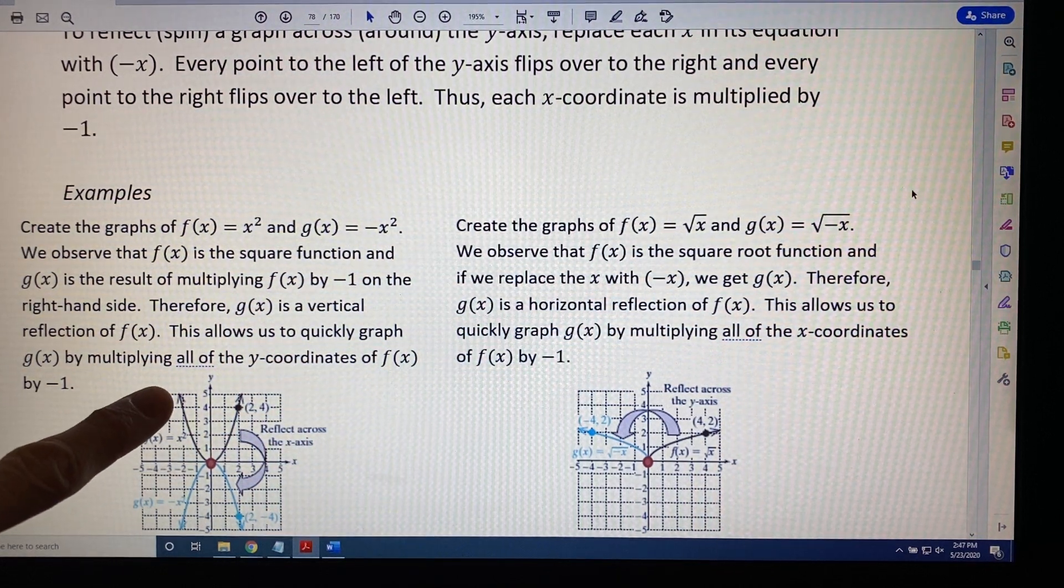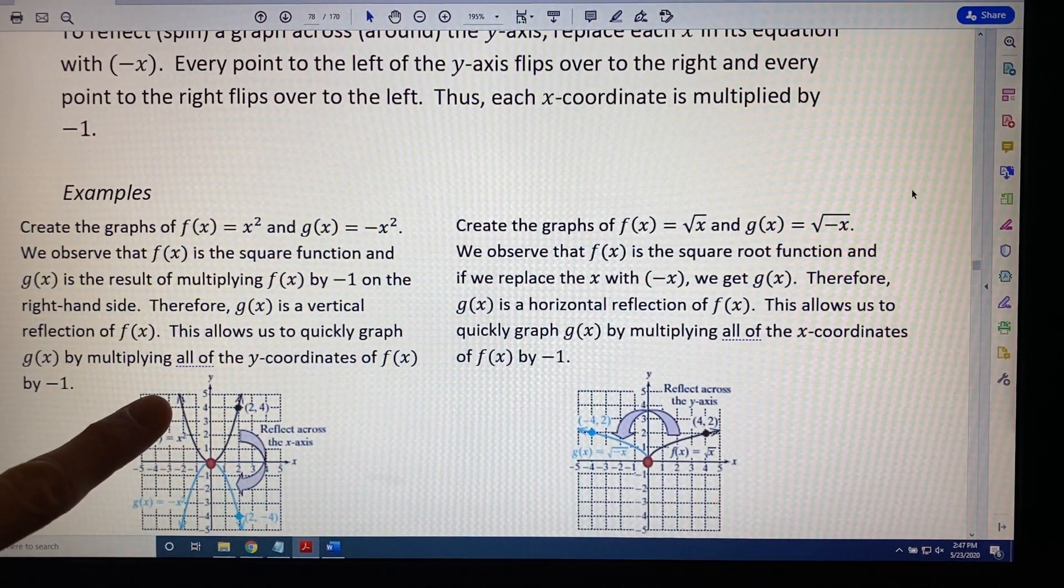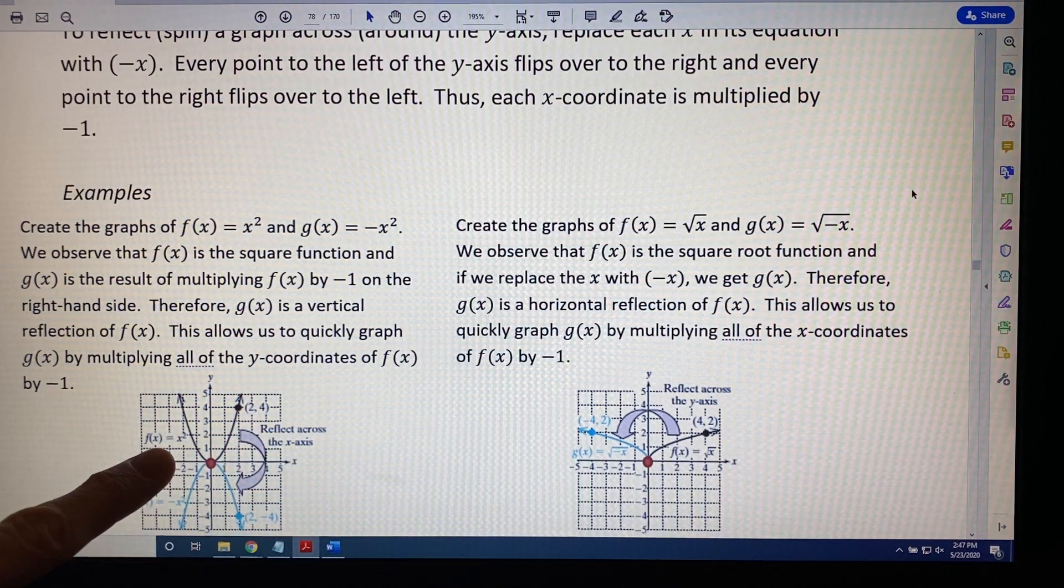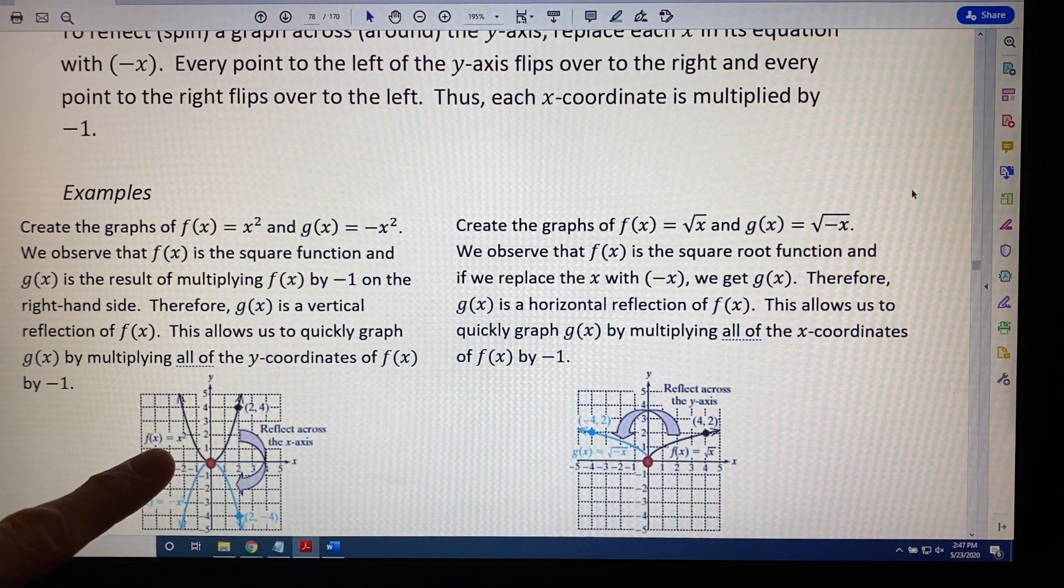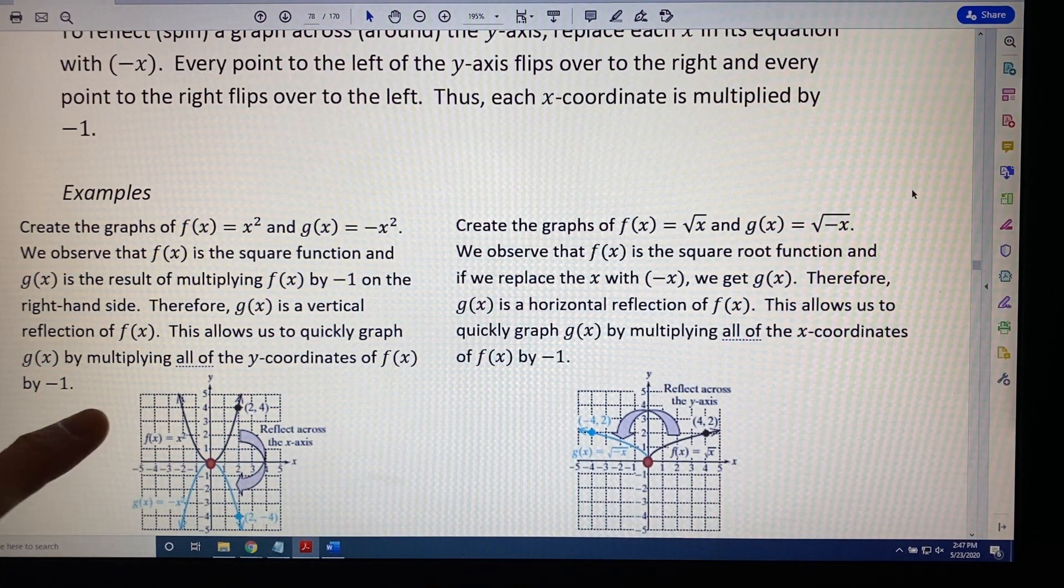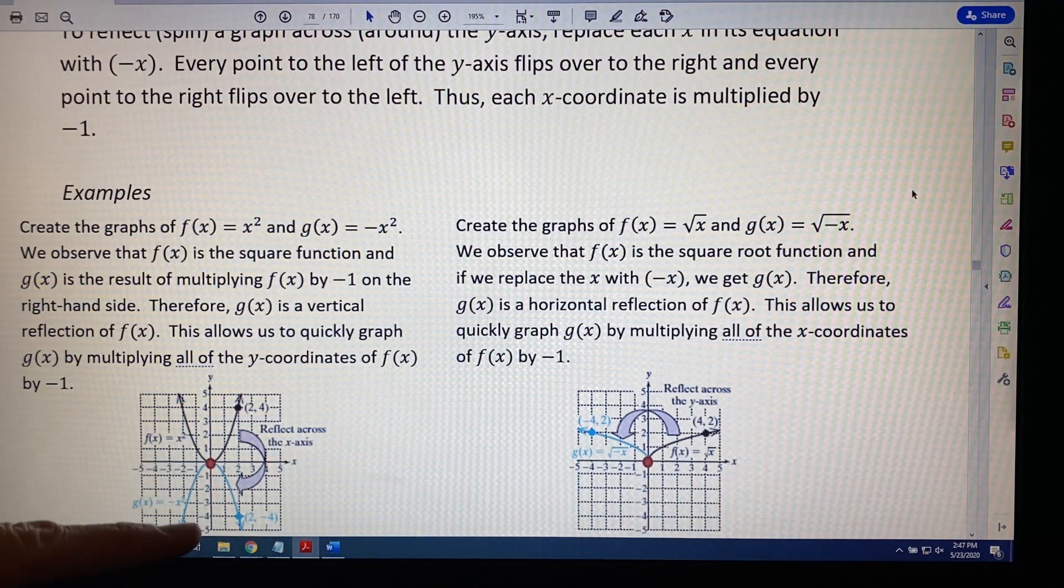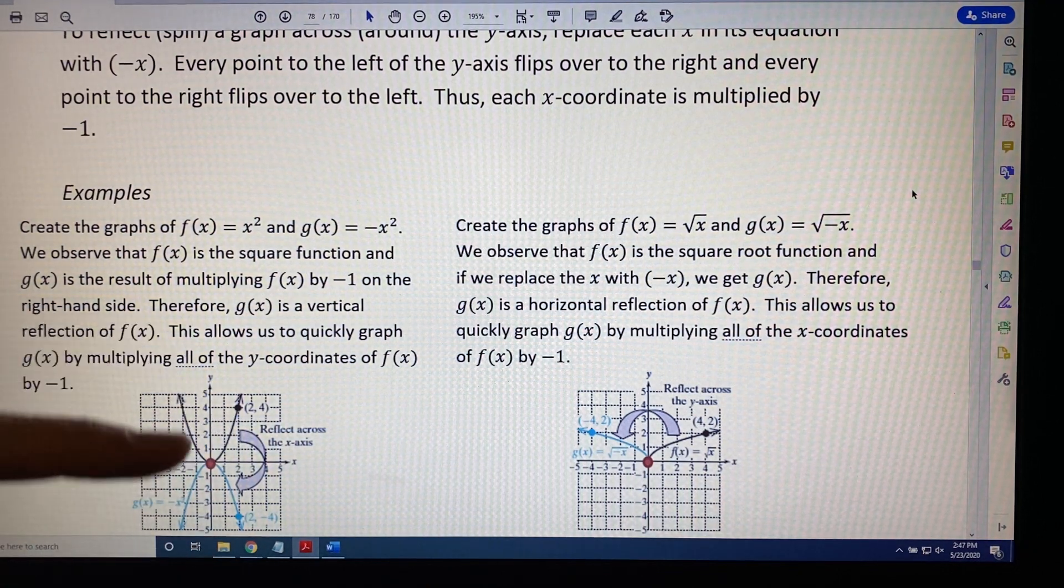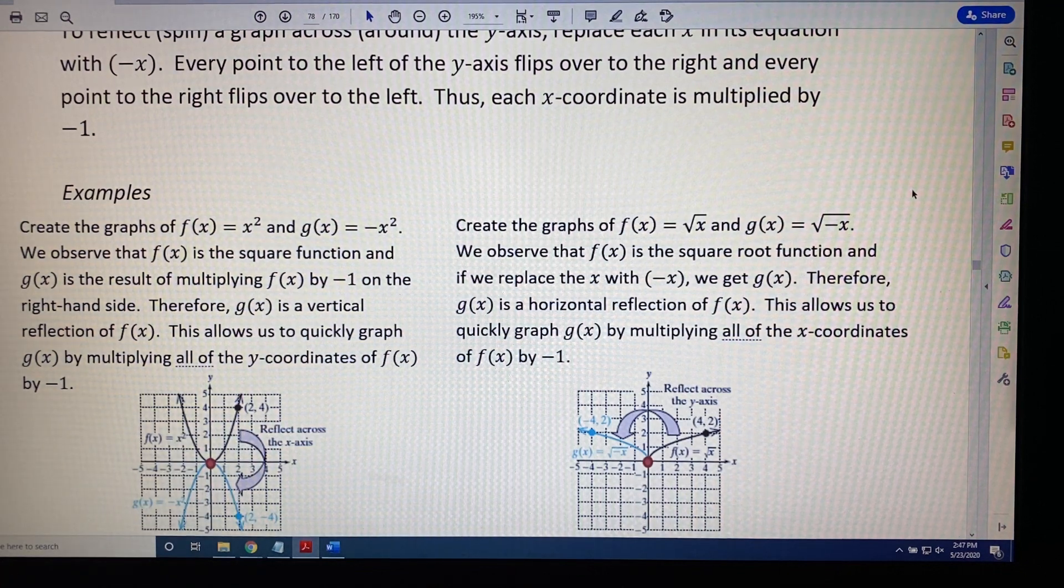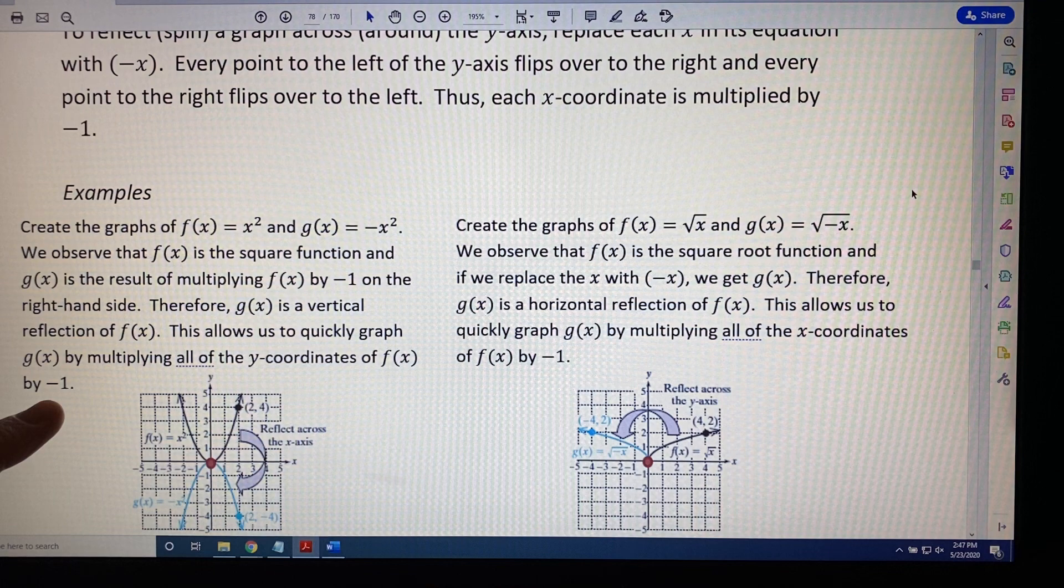We know its coordinates from memory: (-2, 4), (-1, 1), (0, 0), (1, 1), (2, 4). But g(x) is a vertical reflection, a reflection around or across the x-axis of f(x). And in so doing, all of the y-coordinates get multiplied by negative 1.